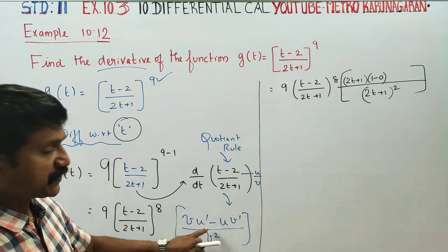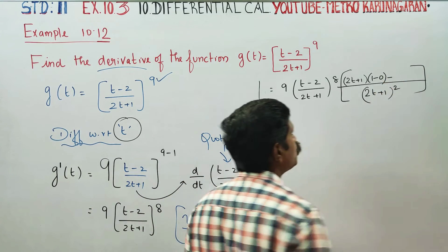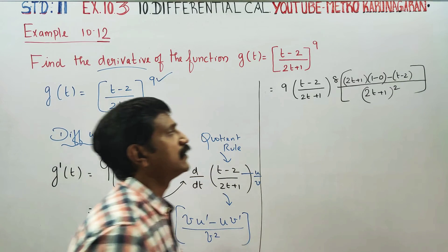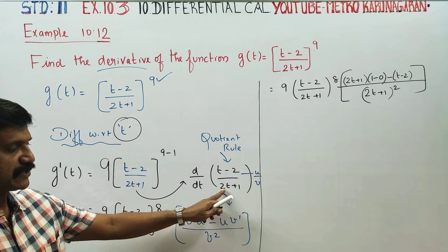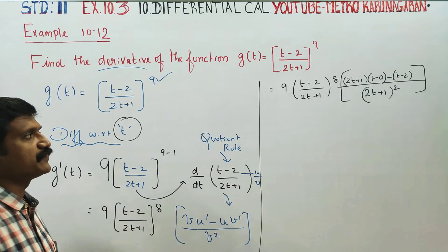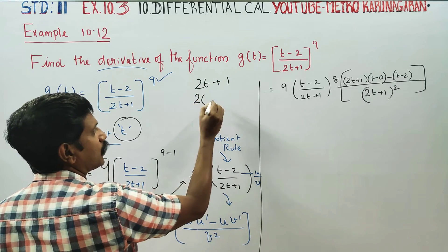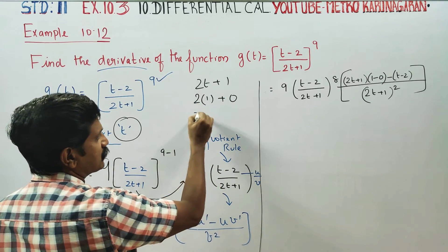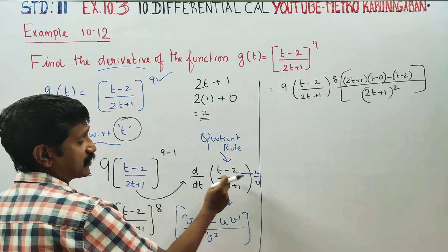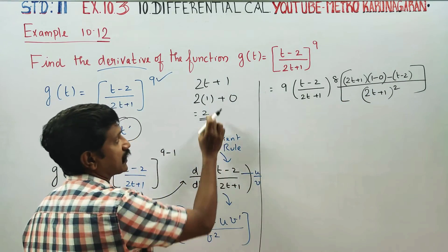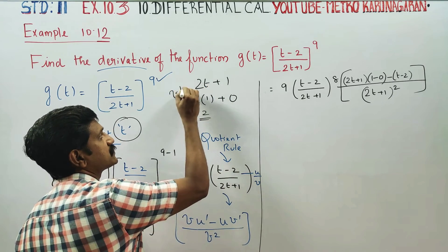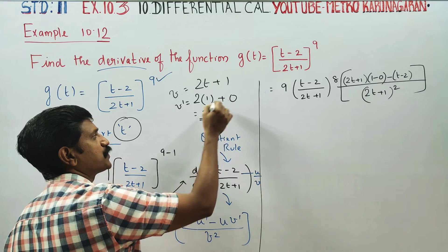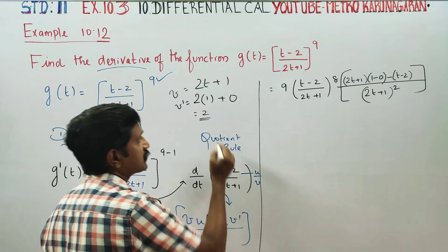V dash: minus u, numerator t minus 2, times denominator differentiate. 2t plus 1 differentiate: 2 times t differentiate is 1, constant differentiate is 0, so 2 into 1 is 2. That is why v dash is 2.